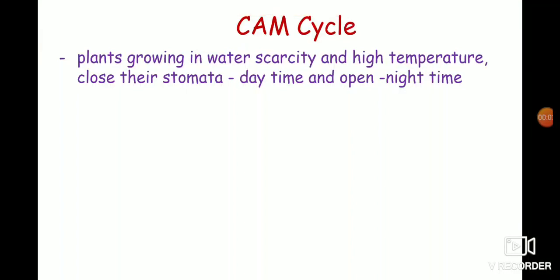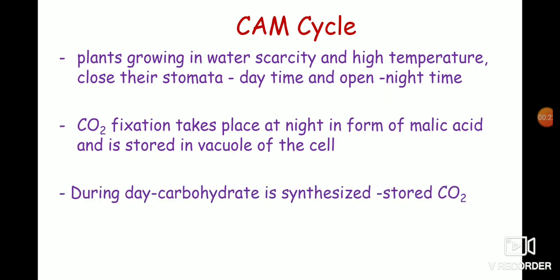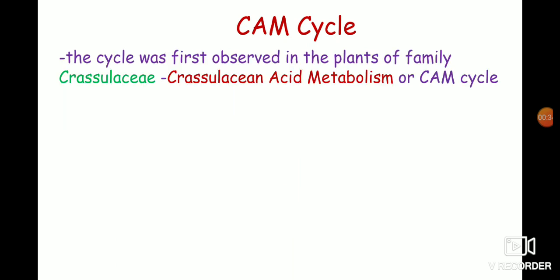Some plants growing in water scarcity and high temperature conditions close their stomata during daytime and open their stomata during nighttime. In these plants, carbon fixation takes place at night in the form of malic acid, and this malic acid is stored in the vacuole of the cell. During day, the carbohydrate is synthesized from the stored carbon dioxide in the form of malic acid. Since the cycle was first observed in the plants of family Crassulaceae, the cycle was called Crassulacean Acid Metabolism or the CAM cycle.